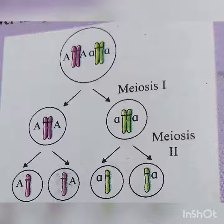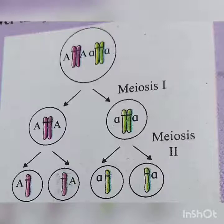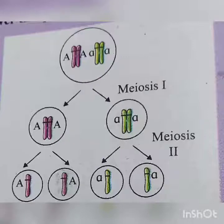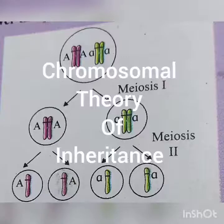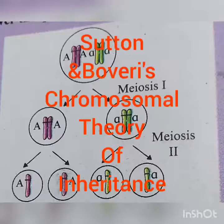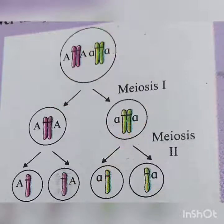Sutton and Boveri, these two scientists in 1903, studied the parallel behavior of Mendel's factors — that is, genes — and the behavior of chromosomes at the time of meiosis. Based on these observations, the chromosomal theory of inheritance was put forth by Sutton and Boveri.